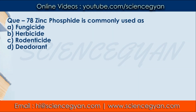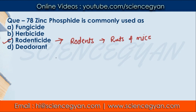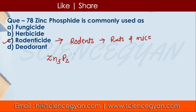Question number 78: Zinc phosphide is commonly used as — what is the use of zinc phosphide? The correct answer is that it is used as a rodenticide. Rodenticides are made to kill rodents — rodents being rats and mice. Zinc phosphide is made from a combination of zinc and phosphorus, with formula Zn₃P₂.